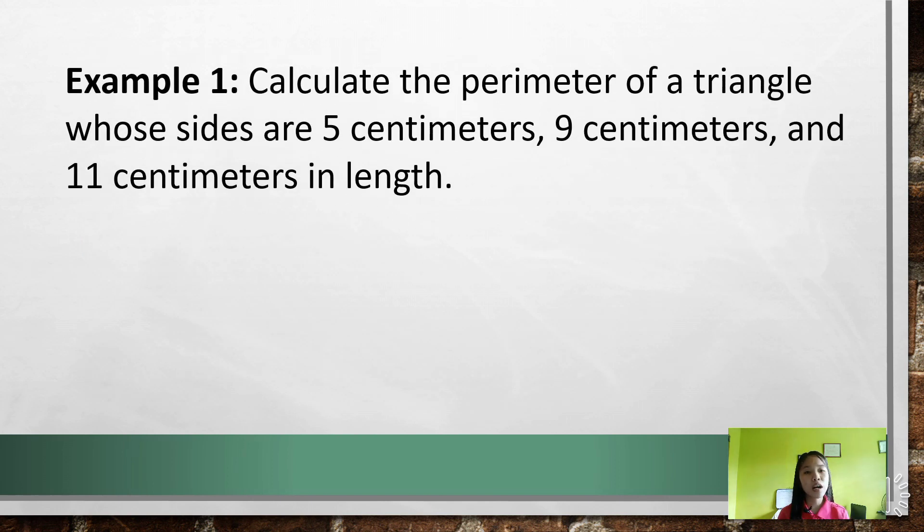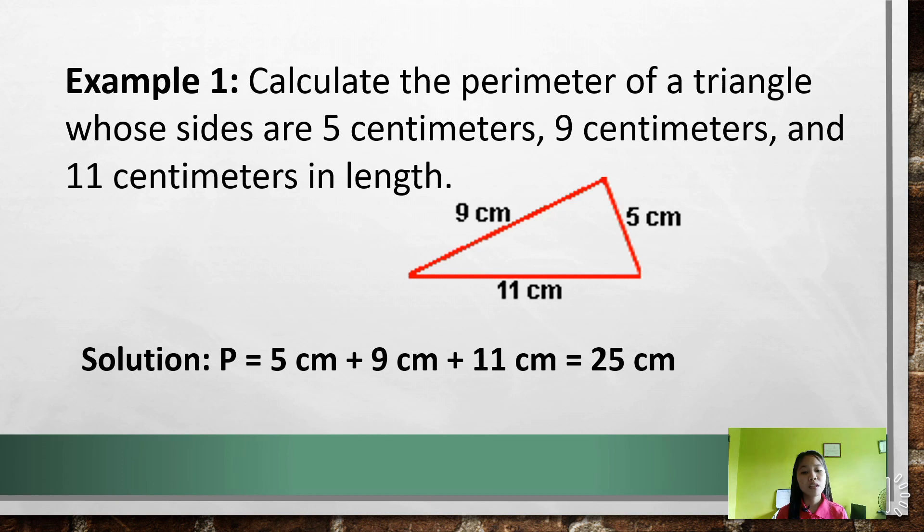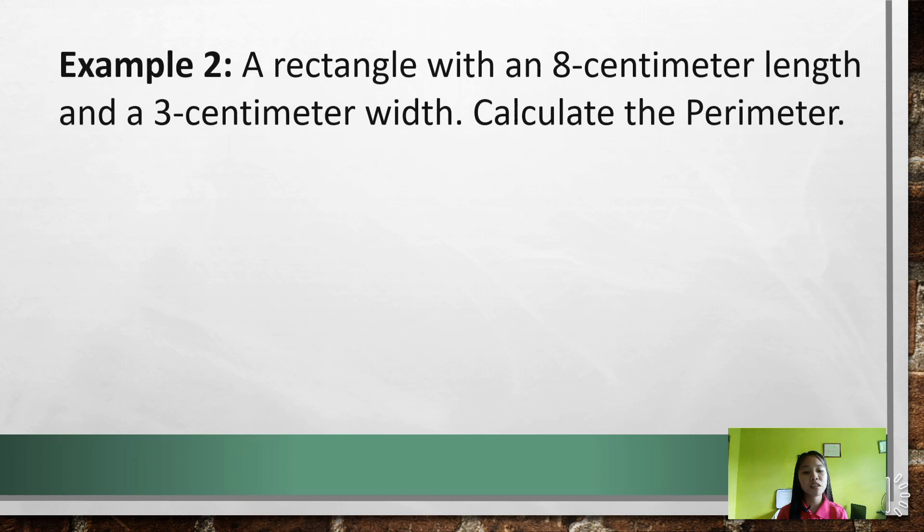Here's our example number one. We will calculate the perimeter of a triangle whose sides are 5 centimeters, 9 centimeters, and 11 centimeters in length. For our solution, we'll have P, which is the perimeter, equals 5 cm + 9 cm + 11 cm, which equals 25 centimeters. Notice that we just add the measurement of the edges of the triangle.